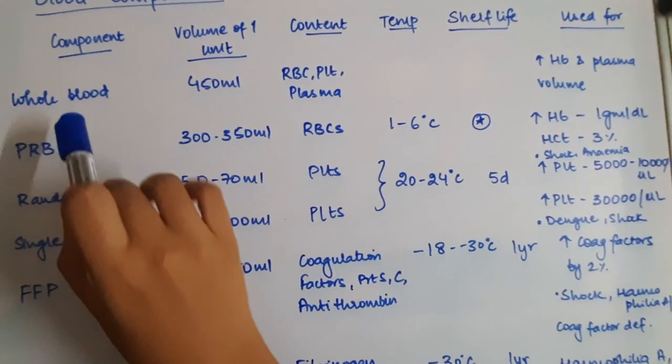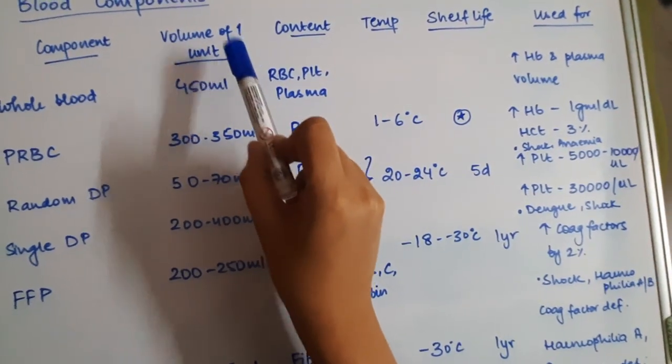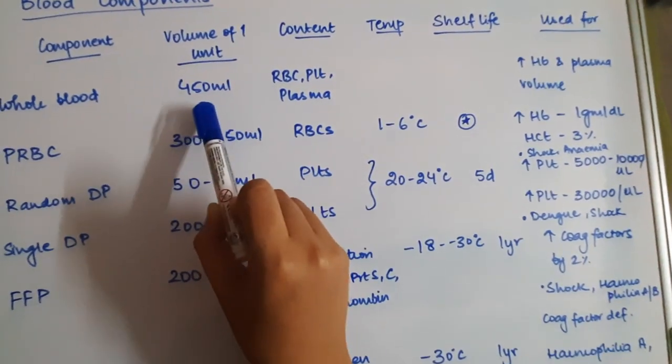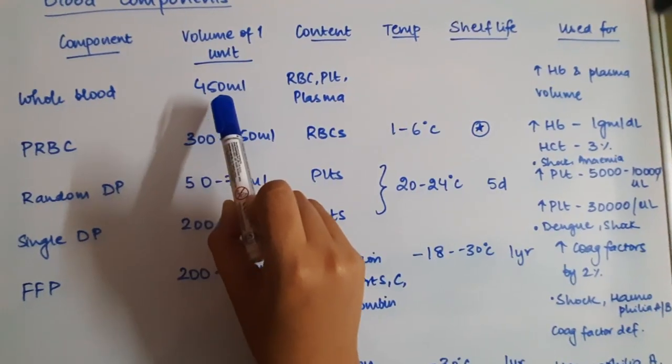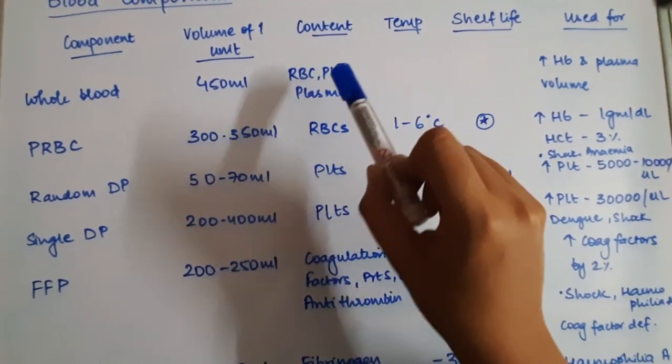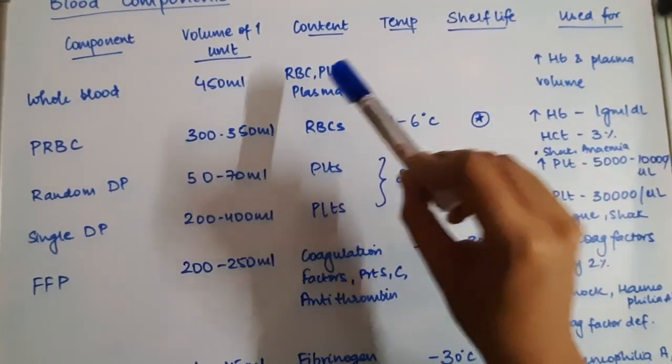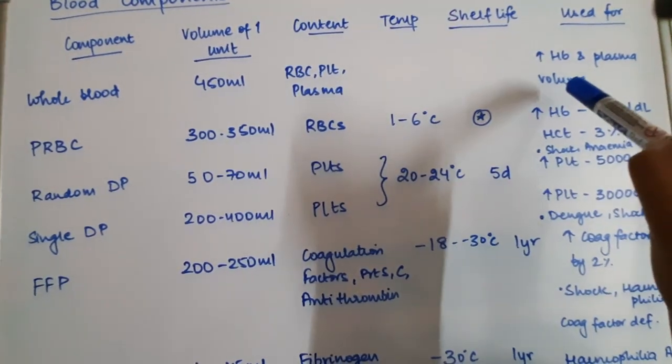The first component is whole blood. The volume of the packet consists of 450 ml of whole blood. The packet consists of RBCs, platelets, as well as plasma, and they are used for increasing hemoglobin as well as plasma volume.